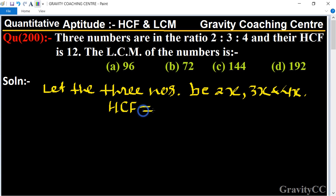The HCF of 2x, 3x, and 4x is x, the common factor. So x equals 12.